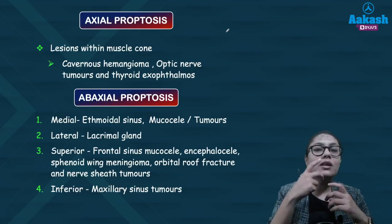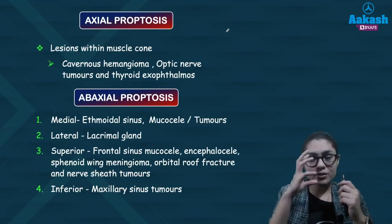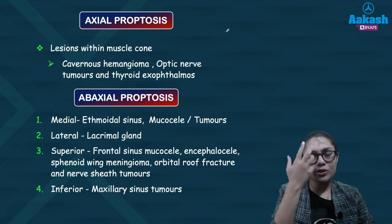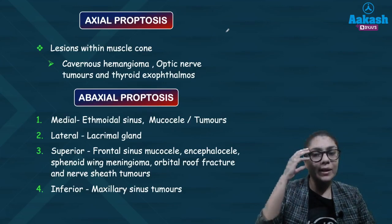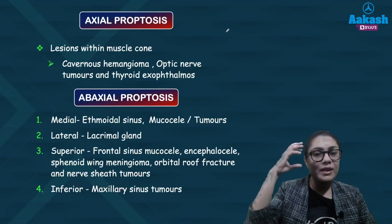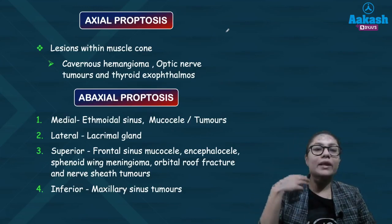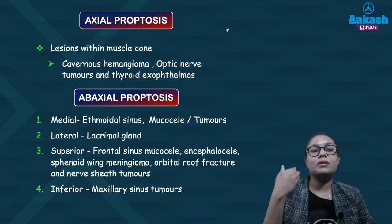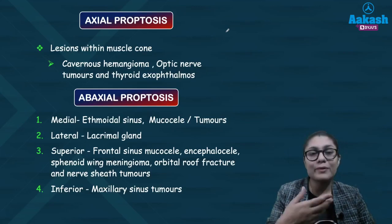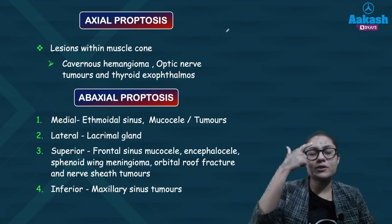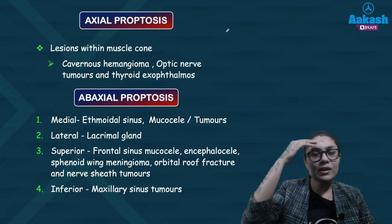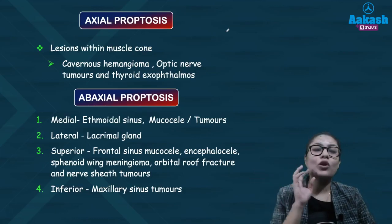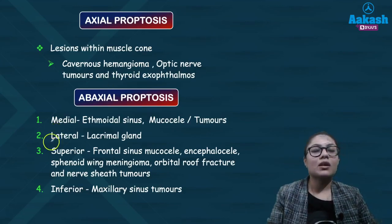Ab-axial proptosis is generally seen due to involvement of structures within the walls of the orbit. A medially located mass such as a mucocele or ethmoidal sinus tumor pushes the eyeball laterally. The lacrimal gland, located laterally and superiorly, when enlarged pushes the eye medially and downwards. Superiorly located masses — mucoceles from frontal sinus, encephalocele, sphenoid meningioma, or orbital roof fracture — shift the eye downwards, while maxillary sinus involvement shifts the eye upwards.